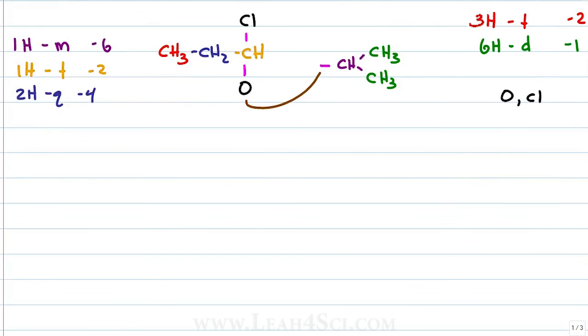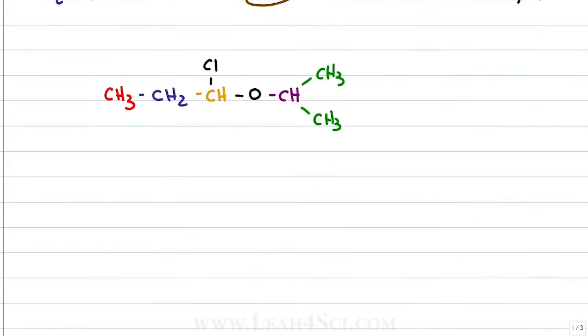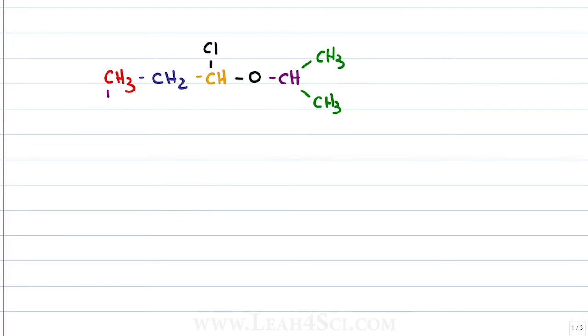So now that we've matched everything up and we have all our puzzle pieces together, the final step is to draw this into some sort of a coherent molecule because right now it looks like a mess. I'll draw it out with all the atoms first then we'll do a line structure. So we have a CH3 bound to a CH2 bound to a CH that is also holding a chlorine and we have an oxygen bound to the purple CH bound to two green CH3 groups.